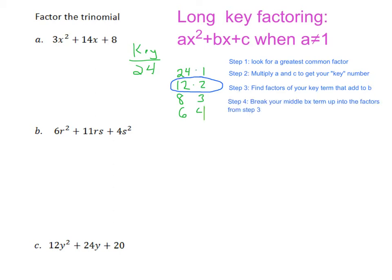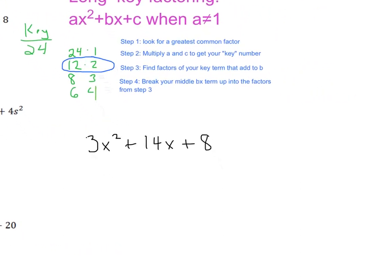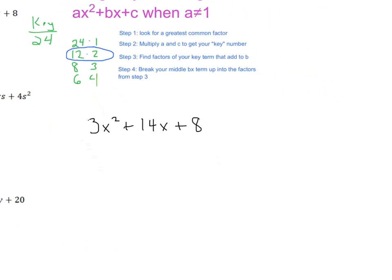So your fourth step is we are going to break our middle term 14x up into 12x plus 2x. So now I'm going to go ahead and rewrite this over here. So we'll bring this down here, 3x squared plus 14x plus 8. And I'm going to now move over here so we can just go ahead and take a look at this problem.